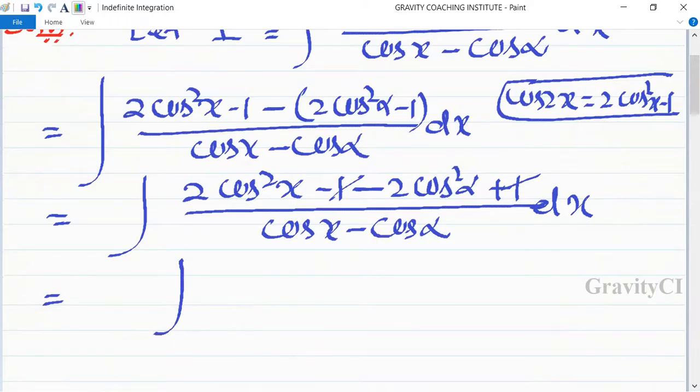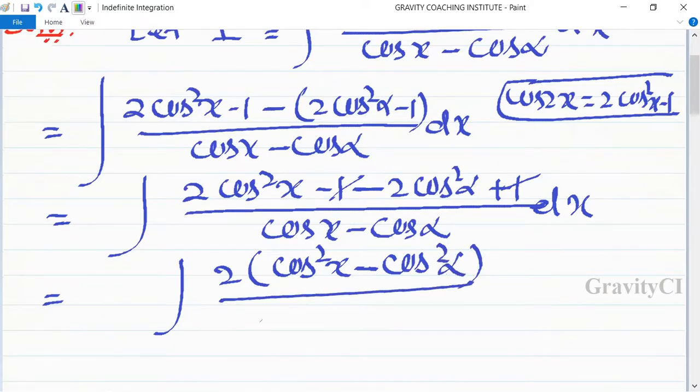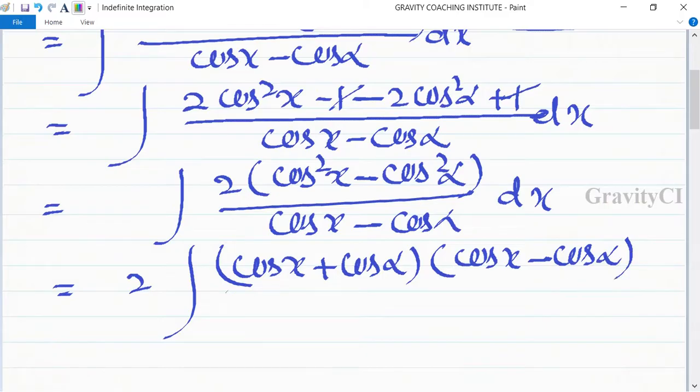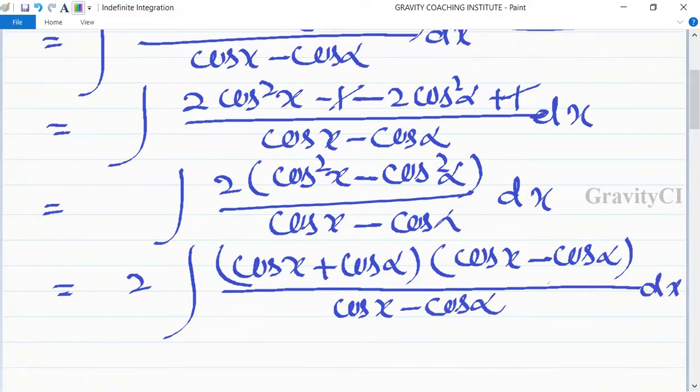We can take 2 as common to get 2 times cos square x minus cos square alpha upon cos x minus cos alpha dx. So this is equal to 2 times, and we use the a square minus b square identity, which is cos square x minus cos square alpha equals cos x plus cos alpha times cos x minus cos alpha upon cos x minus cos alpha.